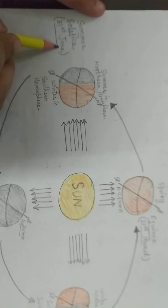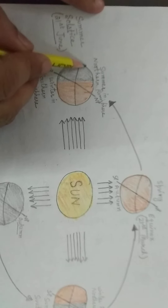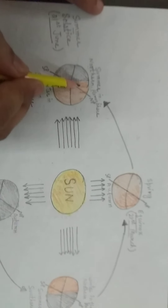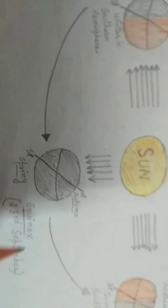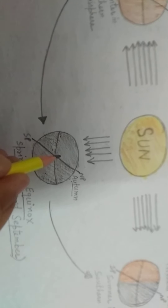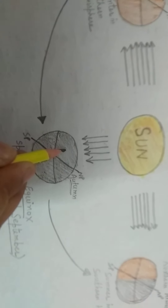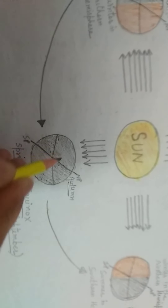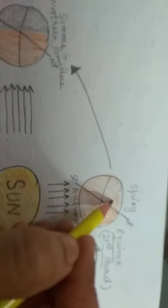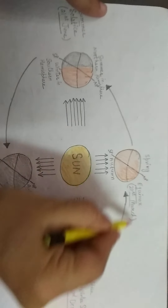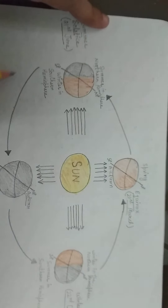For example, June is summer solstice — summer season in the northern hemisphere. After this, in September, it is autumn season in the northern hemisphere. In December, winter season comes in the northern hemisphere. And in March, spring season comes in the northern hemisphere. This revolution of the earth around the sun causes the change in seasons.